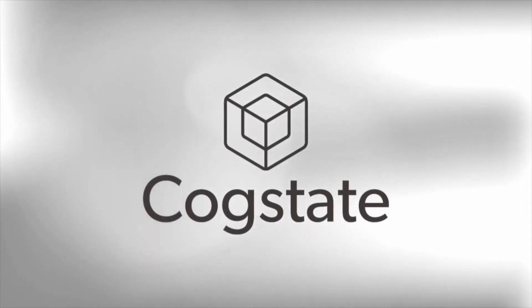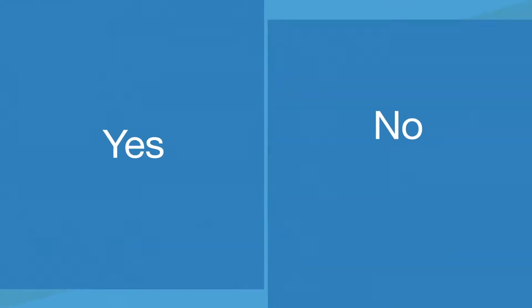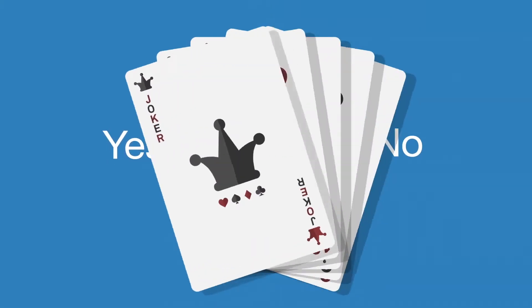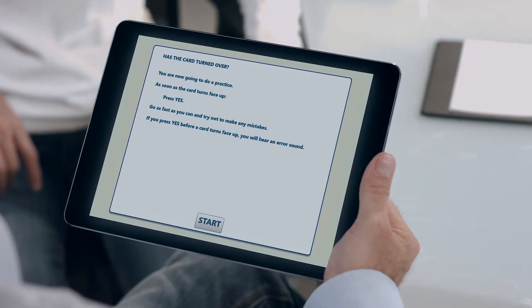The CogState Brief Battery provides a rapid and reliable measure of four core cognitive domains by asking yes or no questions about playing cards. The study participant is instructed by a test supervisor and before each test begins, instructions are presented and a practice session is completed.